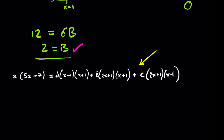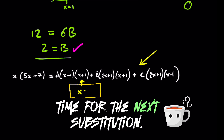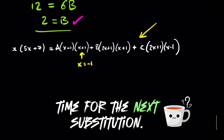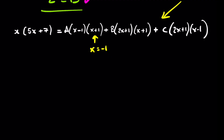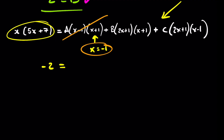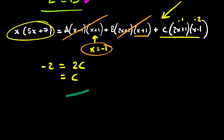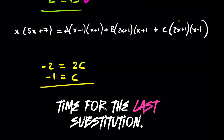I've rewritten the expression to make it clearer. Now substitute x=−1. On the left: −5+7=2, multiplied by −1 gives −2. On the right, the A and B terms vanish, leaving 2C. So −2=2C, meaning C=−1.